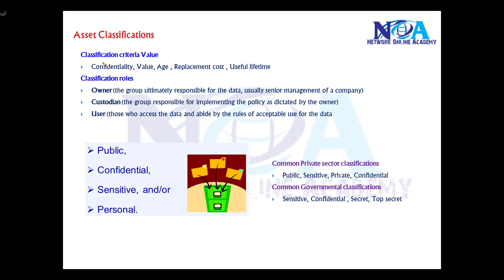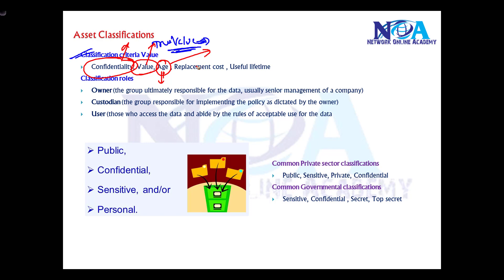Classification of assets depends upon the confidentiality and the value of that particular asset. The true value largely depends upon the type of asset. Depending upon the value of the asset, you want to provide more security if it values more. Also consider the age of that particular asset — how long it is useful for the company — because after a certain period, a specific asset may not be useful, like old records that might not be relevant in the next five years.